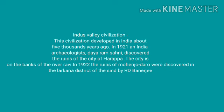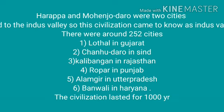In 1922, the ruins of Mohenjo-daro were discovered in the Larkana district of Sindh by R.D. Banerji. Harappa and Mohenjo-daro were the two cities which belonged to the Indus Valley. So this civilization came to be known as the Indus Valley Civilization. Harappa was the first city to be discovered, hence this civilization also came to be known as the Harappan Civilization. There were around 250 sites in all.